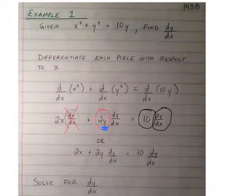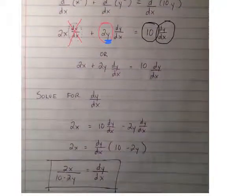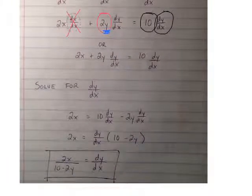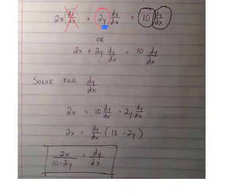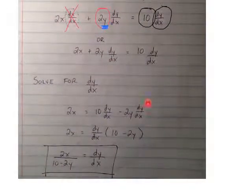And we are trying to solve for dy/dx. So what that means is we can move the dy/dx terms to one side of the equation. So I subtracted 2y dy/dx from both sides. And then I factored a dy/dx out of the right hand side of the equation. And that gave me dy/dx times 10 minus 2y. And since I'm trying to solve for that dy/dx, I can divide both sides by 10 minus 2y, and arrive at my answer.